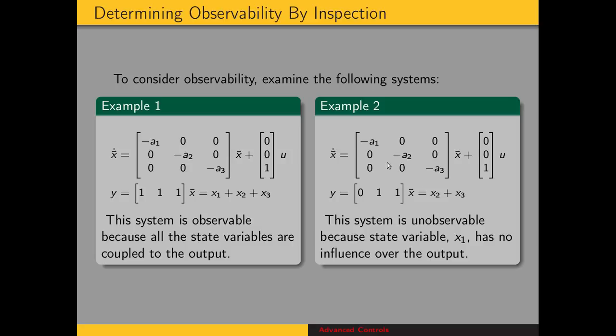Since we have a diagonal state matrix, there's no coupling between the state variables. And so that means that this system is unobservable because the state variable x1 has no influence over the output.